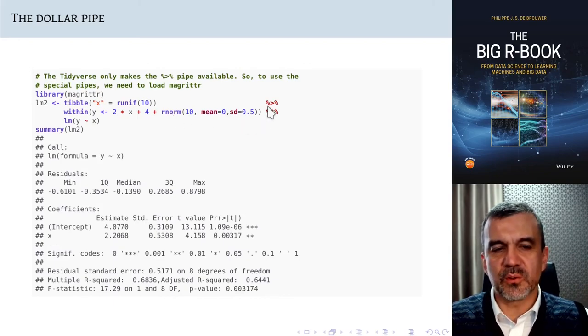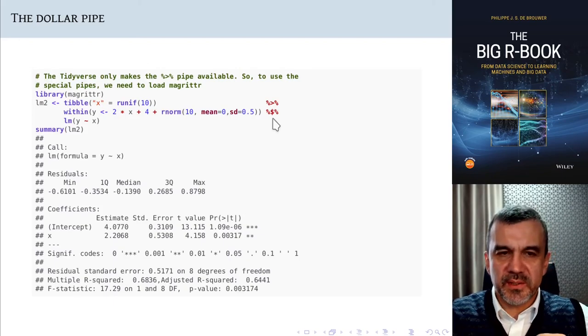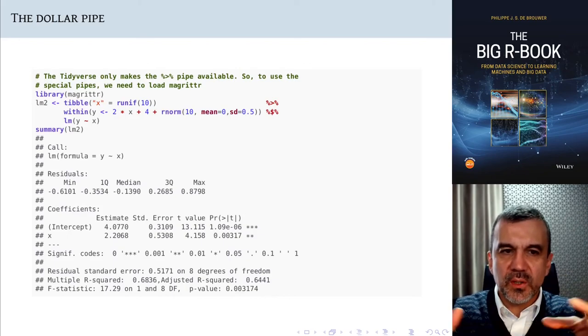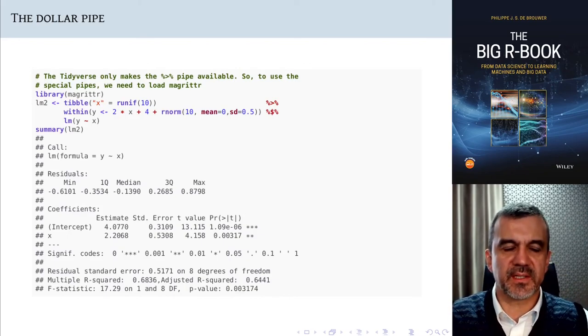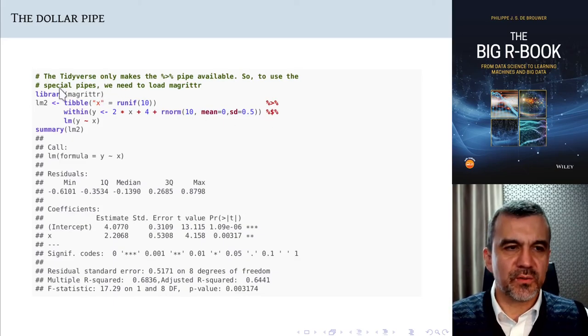That is not part of the standard functionality of this thing. In this line you cannot address the columns of the data frame or the tibble that has been passed on from the line before. You can do that, however, if you use the dollar. And the dollar pipe, that is the one that will basically make all the columns that you have in your data frame available in the next line for directly being addressed. You do need, however, to load the package magrittr for that.